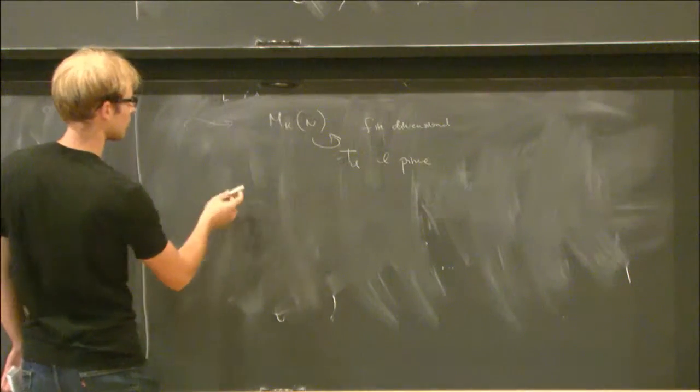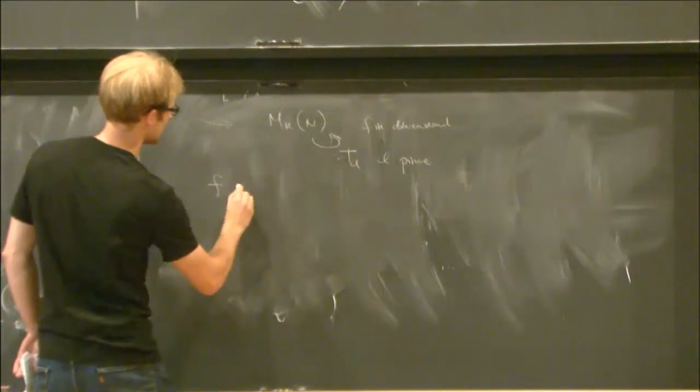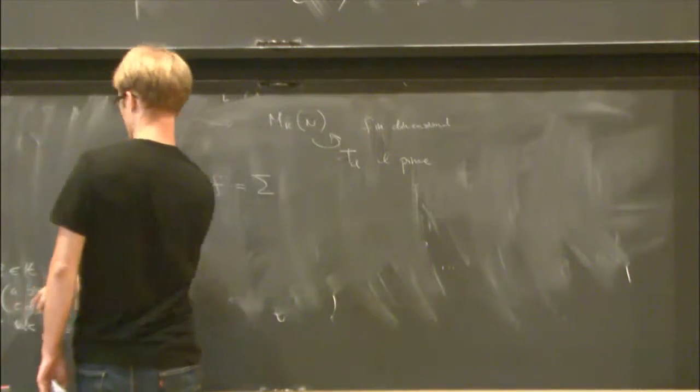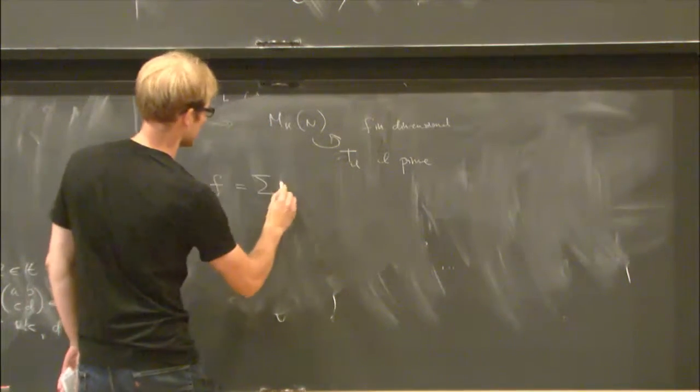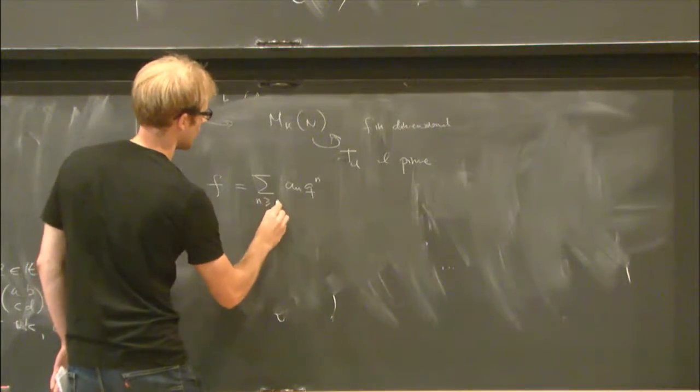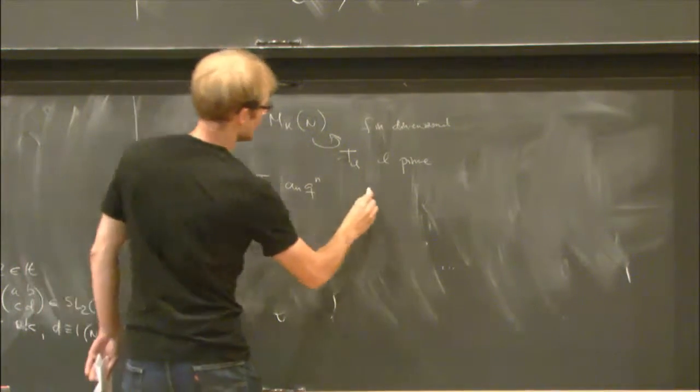So if f is a modular form, then if you plug in the matrix 1, 1, 0, 1, you'll find that f is 1 periodic, so in particular has a Fourier expansion,